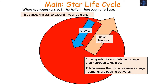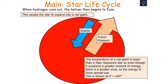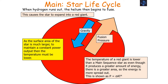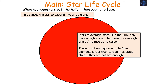The star increases in size and becomes a red giant. The temperature of a red giant is lower than a main sequence star because, even though it produces a greater amount of energy, there is a greater surface area so the energy is more spread out, as shown by the equation P = σAT⁴. As the surface area is much larger, to maintain a constant power output the temperature must be lower. More energy is needed to fuse larger elements together due to greater repulsion between them, since larger elements have more protons and therefore a greater positive charge. The energy found in a star is proportional to its core temperature.